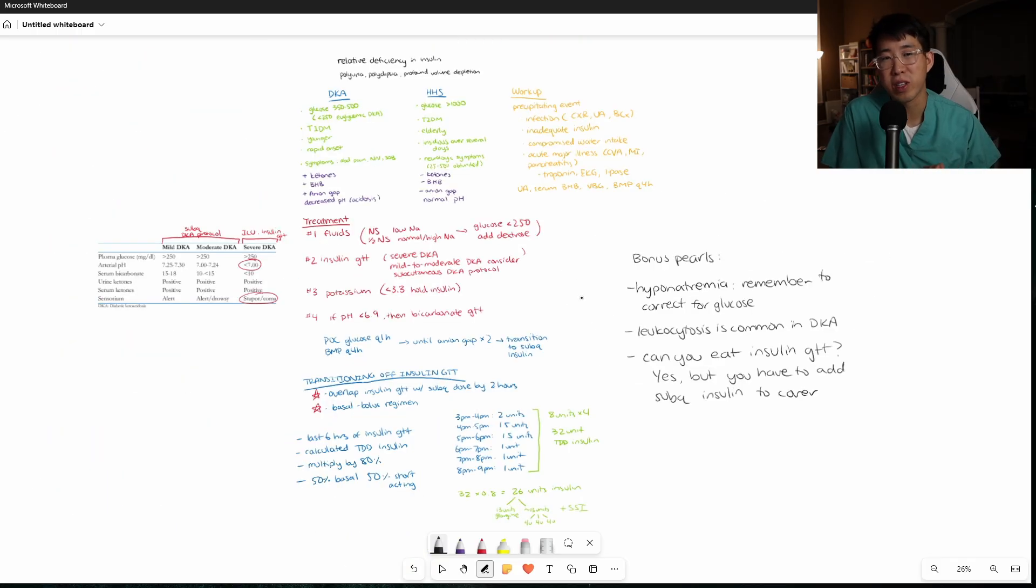All right, guys. So I hope that helped with your understanding of DKA versus HHS. Remember the differences between the two. Remember things that you need to work up for both of them and the treatment, which is essentially the same for both. And then really, really, again, hammer home that point of how to transition off the insulin drip once the patient's anion gap has closed twice. Let me know down in the comments below if you have any questions. Thanks again for watching. I'll see you in the next video and peace.